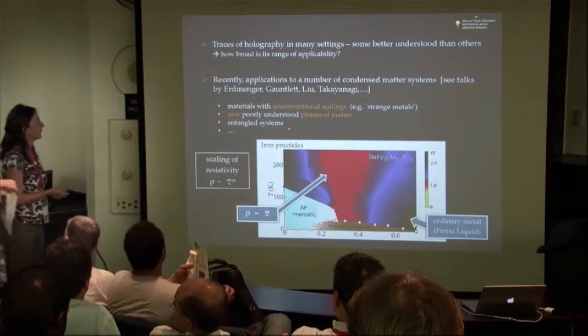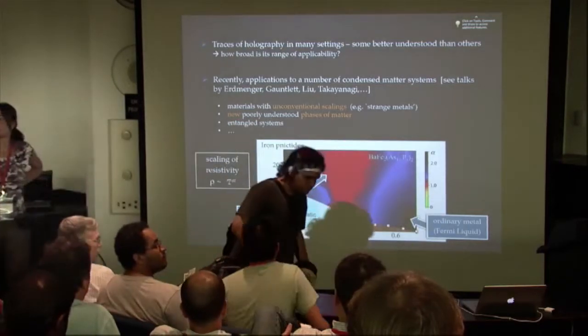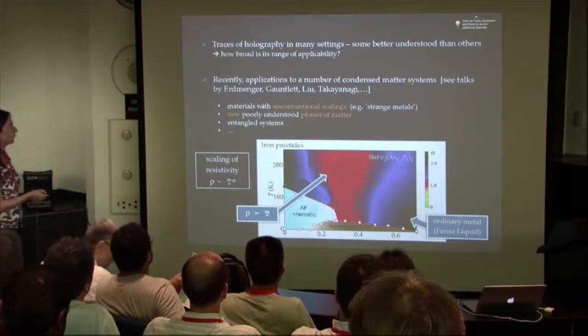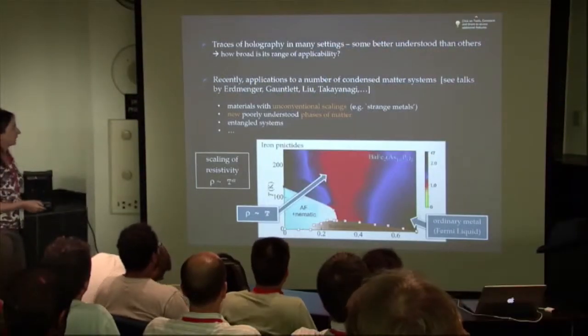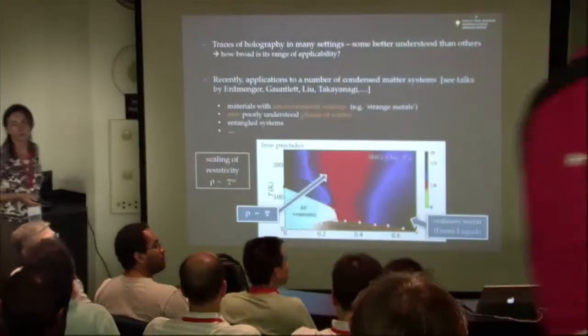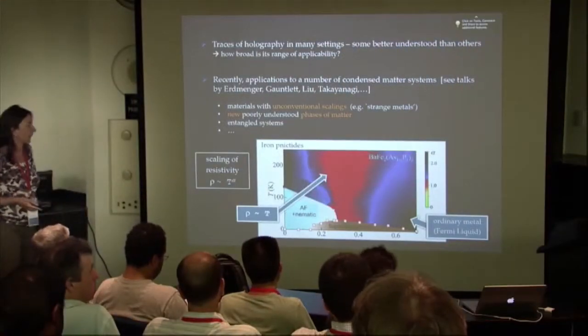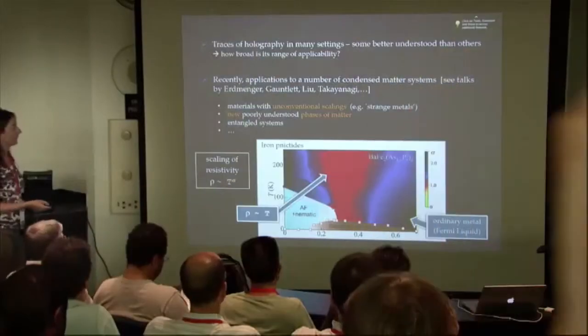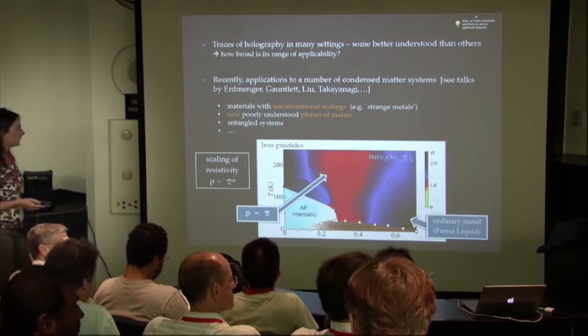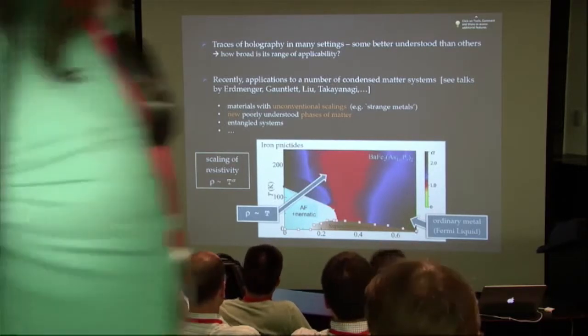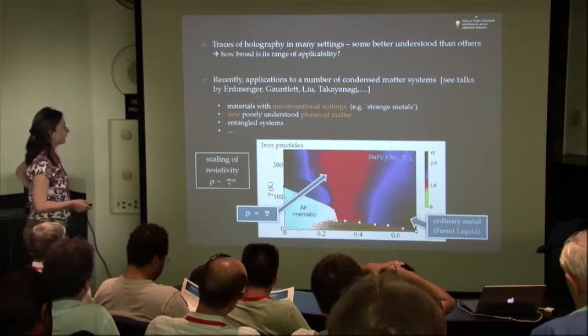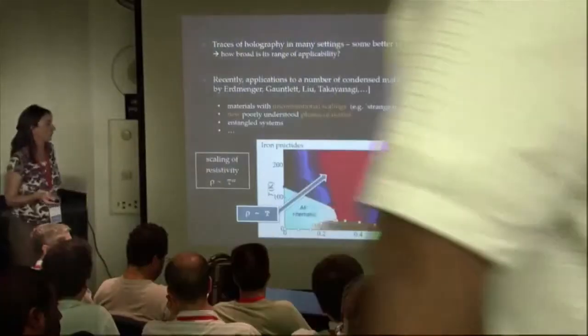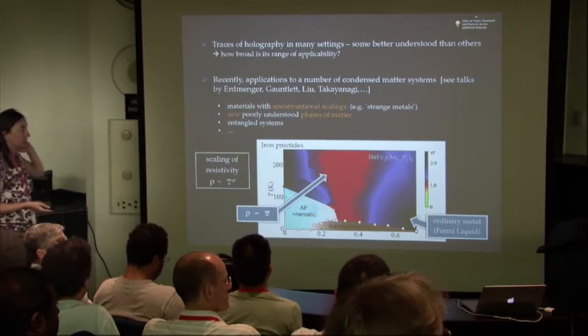The main ideas that people have looked at in terms of condensed matter have to do with materials that have strange behavior, anomalous scalings. This is matter that is new and poorly understood theoretically, and systems with long-range entanglement. For those not very familiar with these applications, I wanted to mention one concrete example.